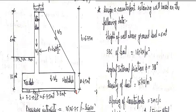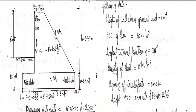SBC of soil 160 kilonewton per meter square. Angle of internal friction phi 30 degrees. Density of soil 16 kilonewton per meter cube.